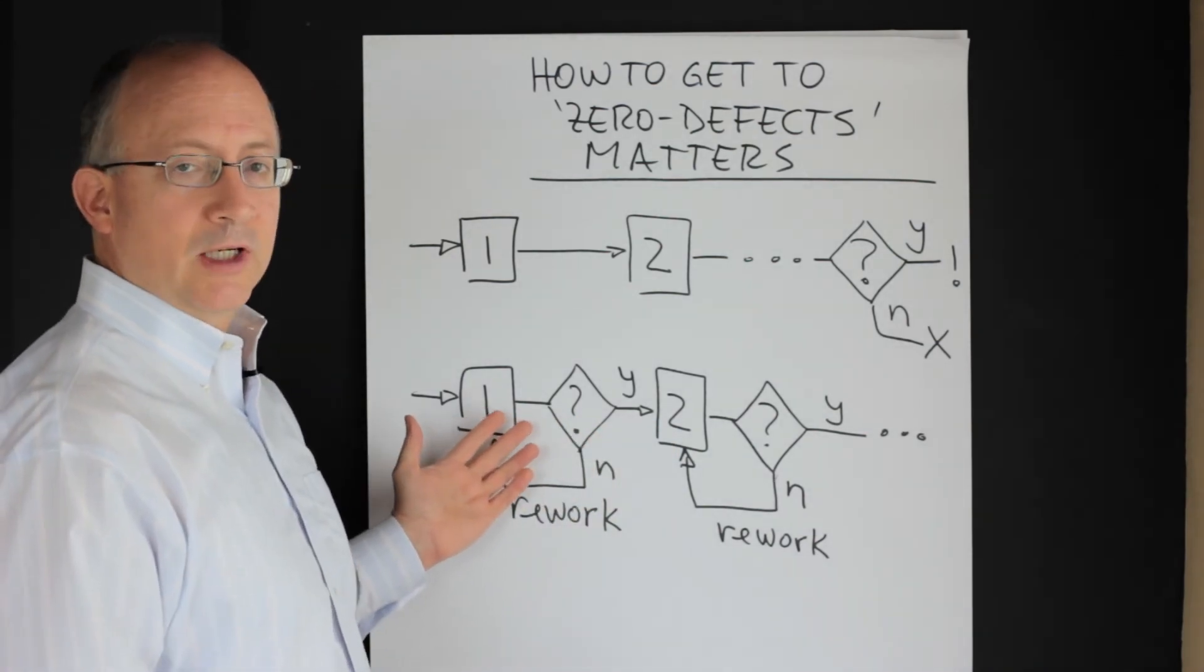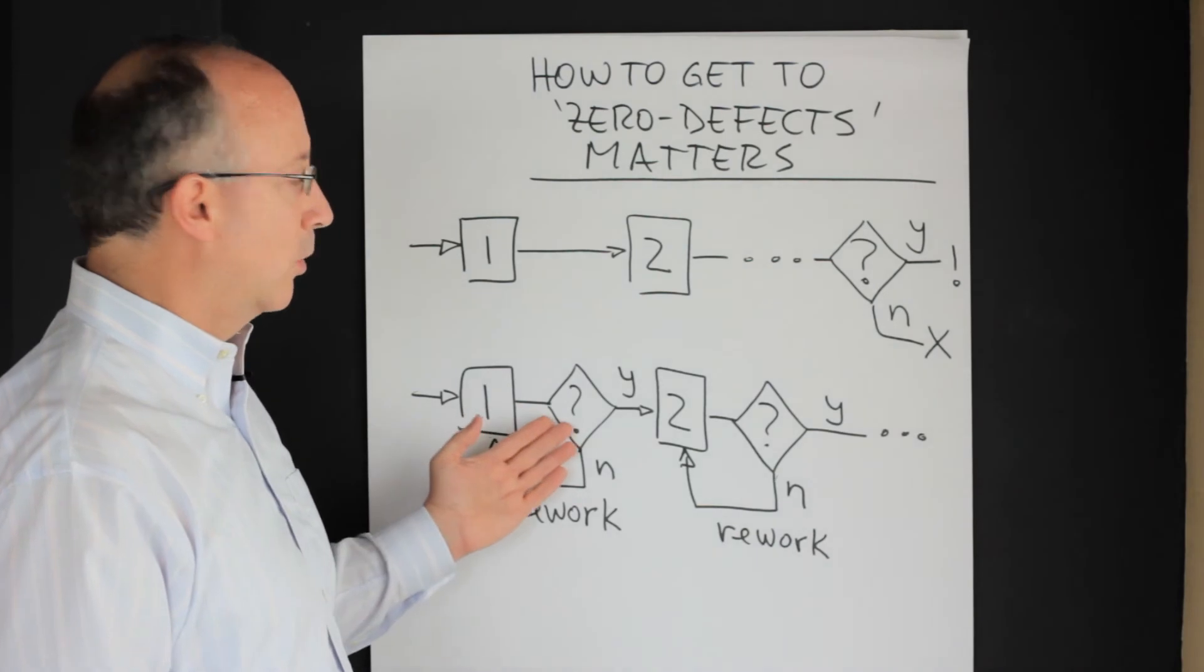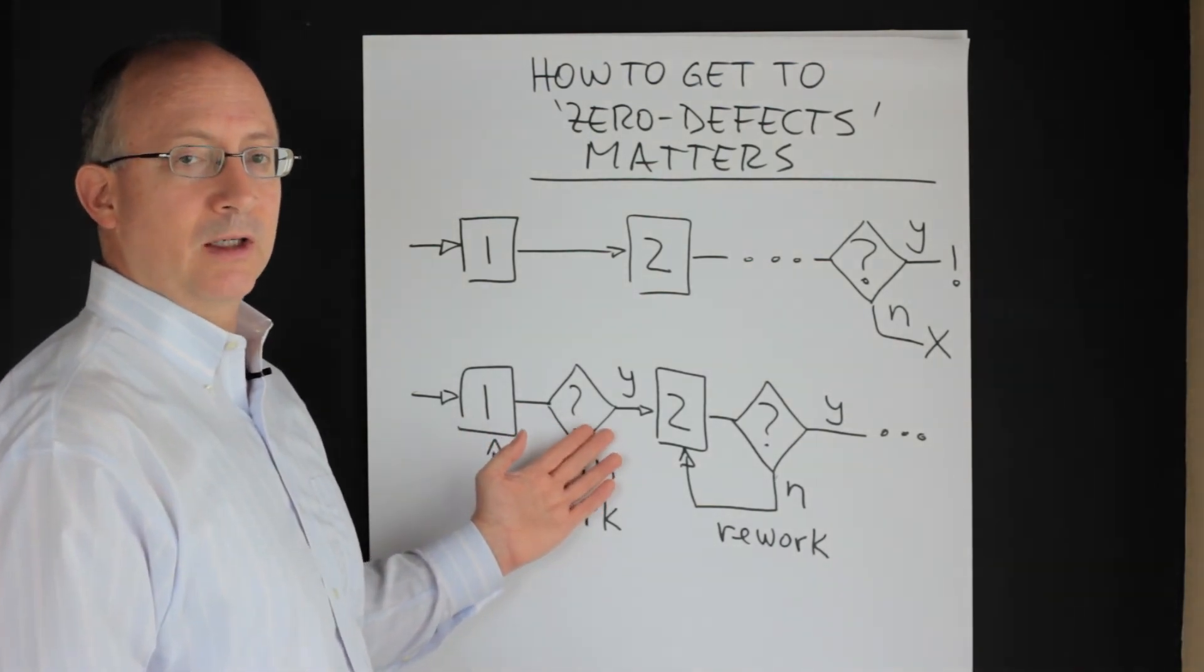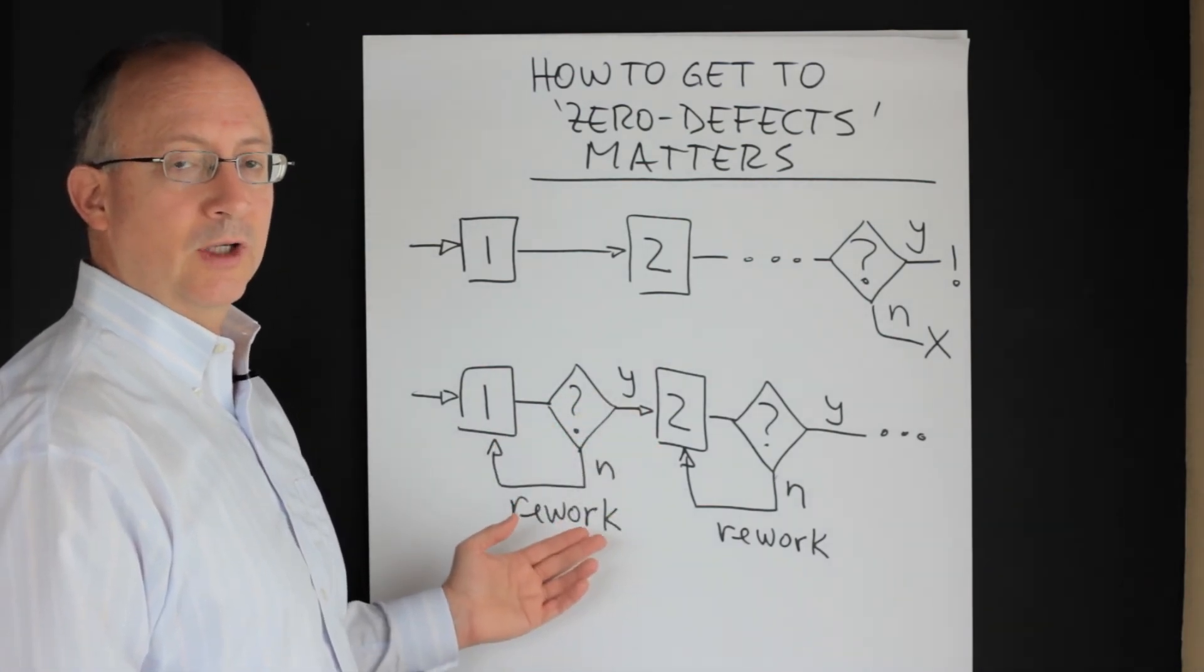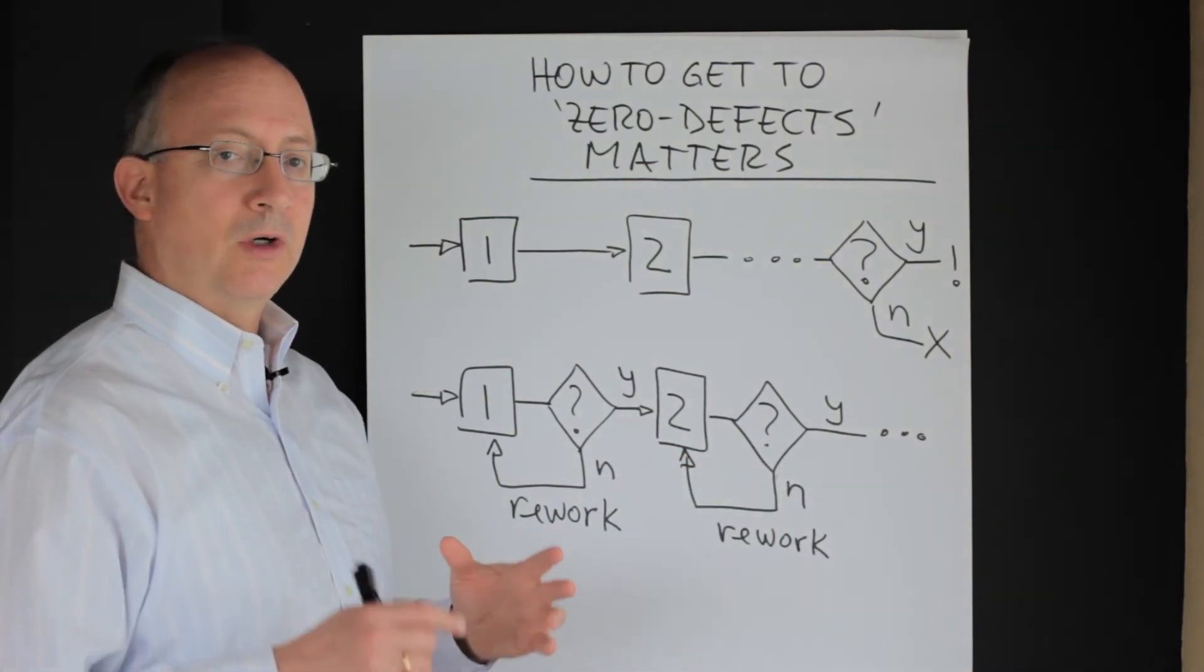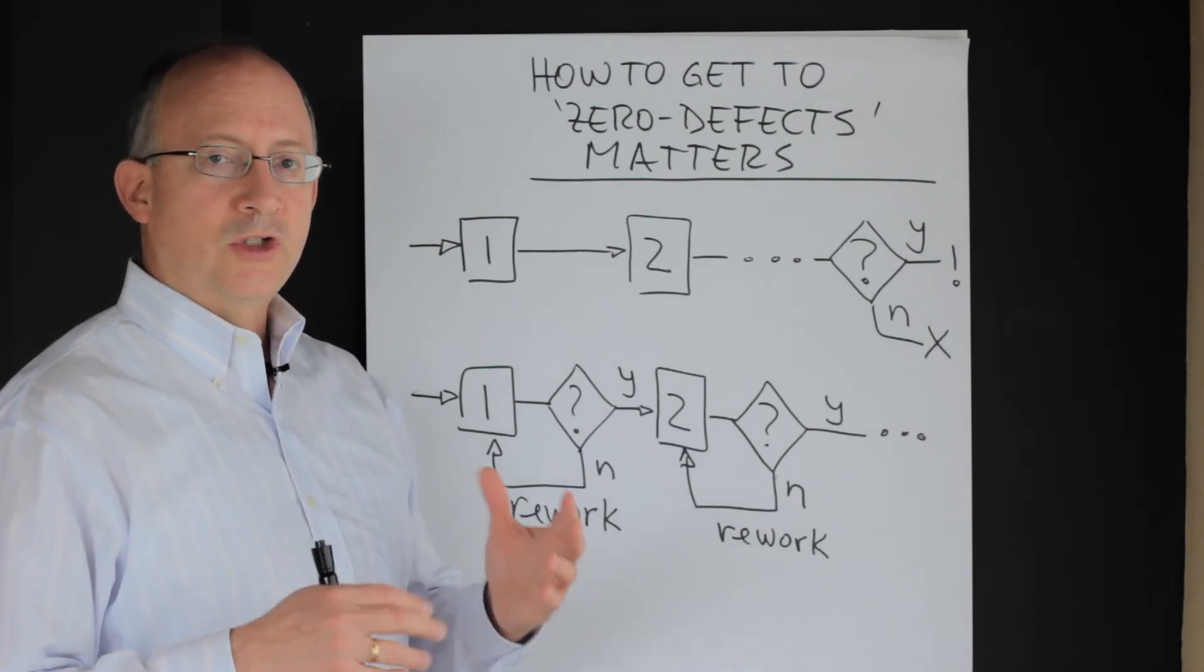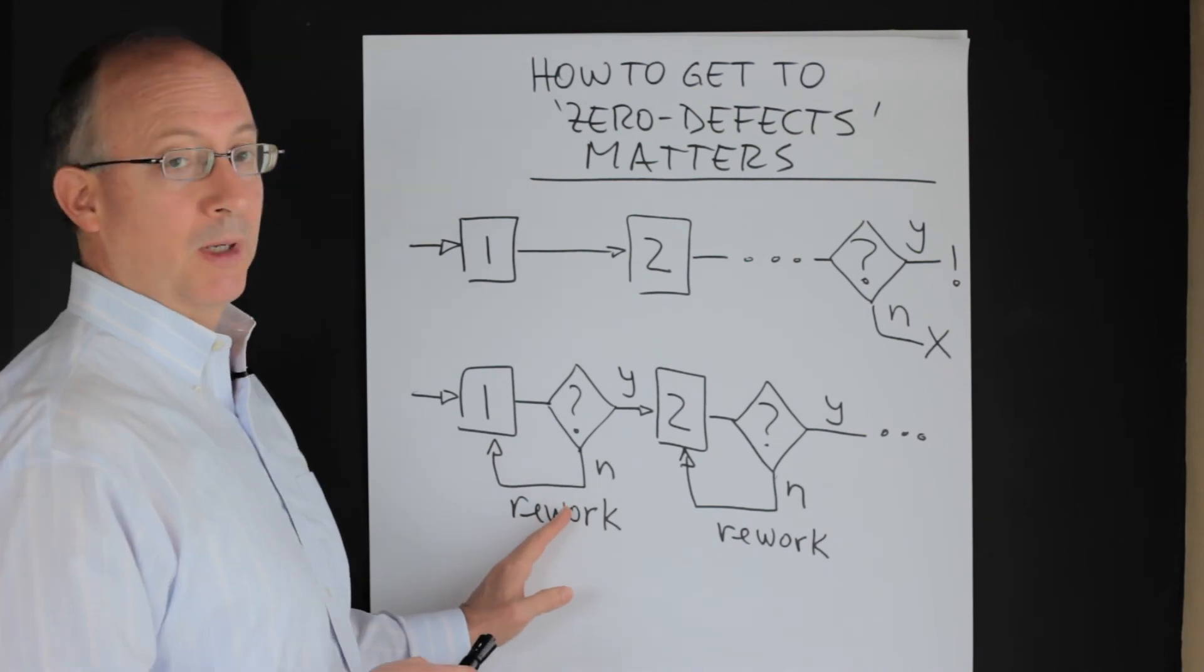Similarly here, only that it happens early on in the process. After step number one you look at the product, you look at the output from this process and then the product is tested. It either passes the test or it doesn't pass the test and so on and so forth at every step.